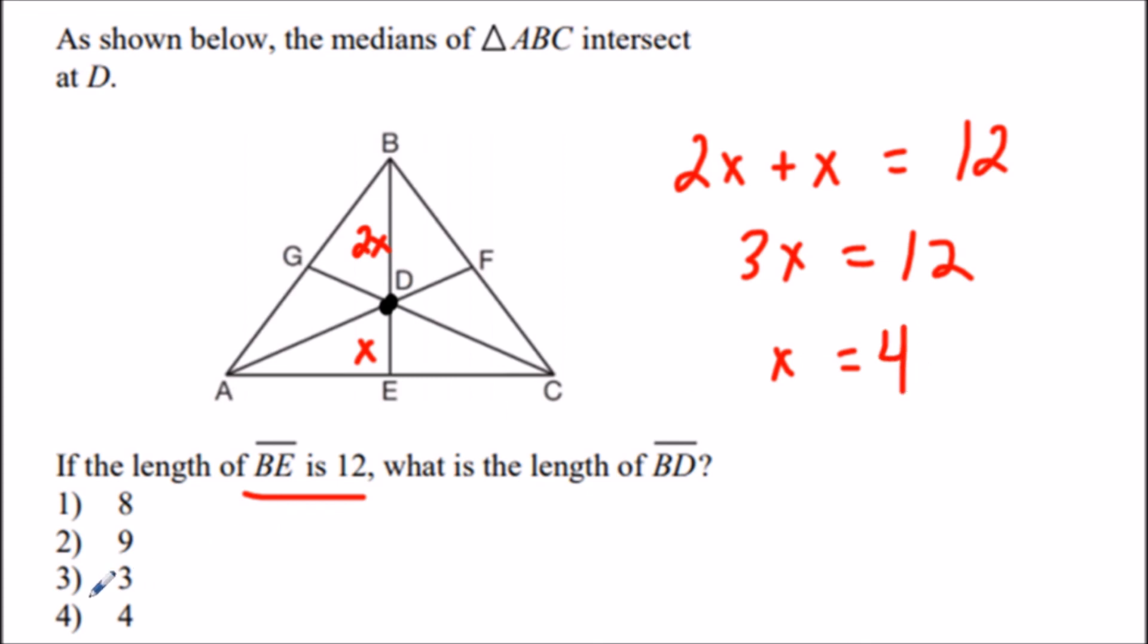But be careful - we want the length of BD, not DE. So we're not done yet. BD equals 2 times 4, which is 8. So our solution is choice 1.